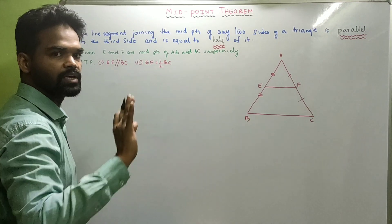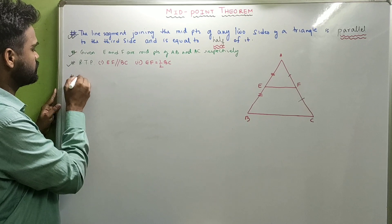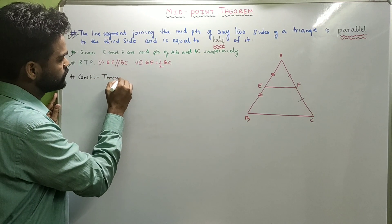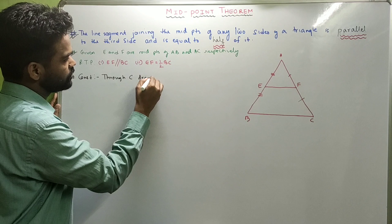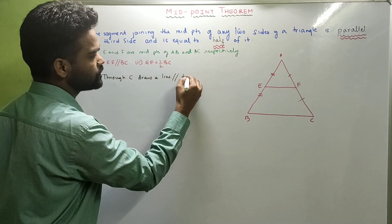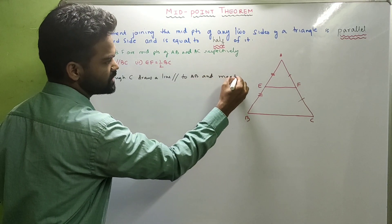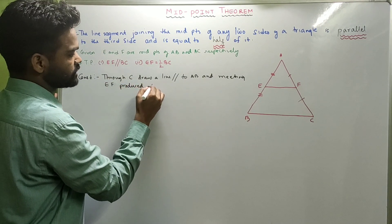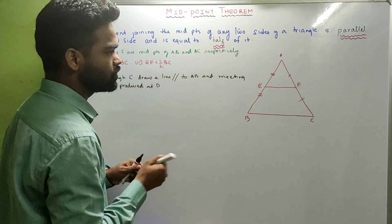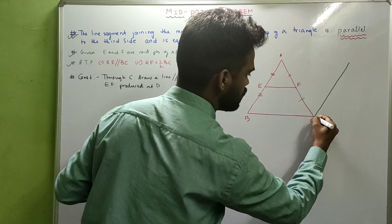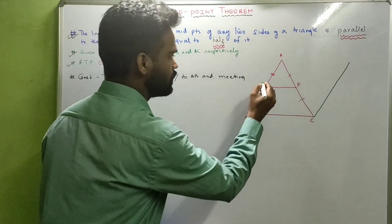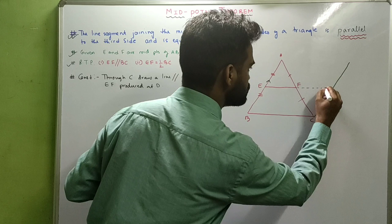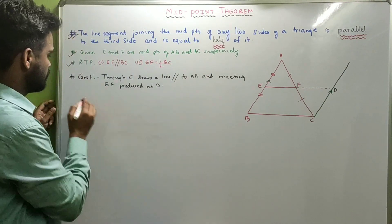Let us try to prove the result. I will do a construction. Through C, draw a line parallel to AB and meeting EF produced at D. Which means if I draw a line parallel to AB, it meets EF produced at D.